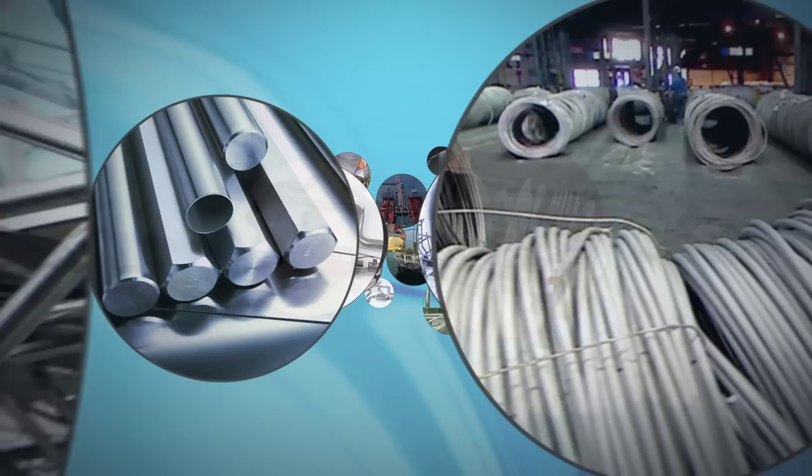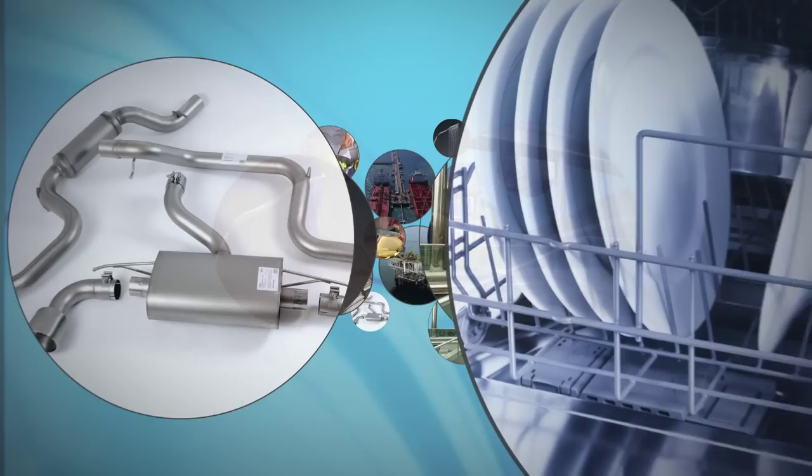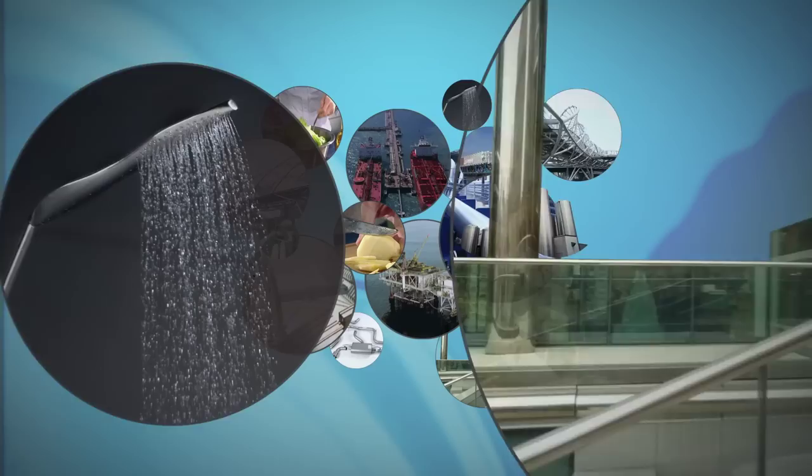Stainless steel brings so many benefits that it has become the normal material in, for example, the interiors of dishwashers, exhaust systems for our cars, or handrails for both indoors and outdoors. All of these products now last much longer than they used to.